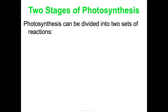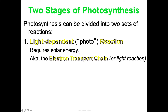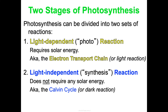Photosynthesis has two stages or two sets of reactions: the light-dependent reaction and the light-independent reaction. The light-dependent reaction is also the 'photo' part of photosynthesis — photo means light — so it requires solar energy. It can also be referred to as the electron transport chain (ETC) or the light reaction. The light-independent reaction is the 'synthesis' part — synthesis means to make something — so we're going to make sugar in this step. It does not require solar energy, so some call it the dark reaction. It's also known as the Calvin cycle.